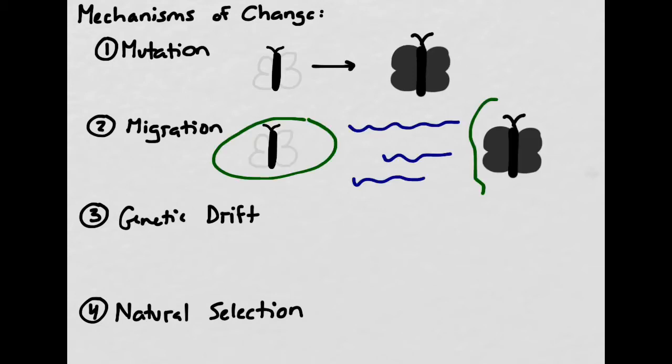Now let's talk about migration. For this example, we're going to imagine that over here on the left we have an island that has a population of the light-colored moths, and it's separated from the mainland by a really large body of water. So normally there aren't any other moths that live on this island. But let's imagine that we have a really big hurricane that comes through, and it blows a bunch of these moths over here, over onto the island. And so now you have changed the frequency of dark moths due to migration, or species moving from a different place.